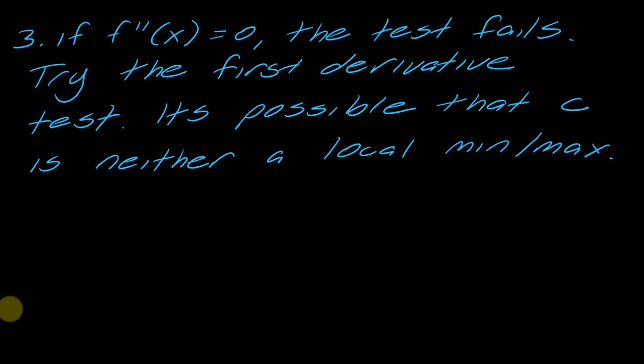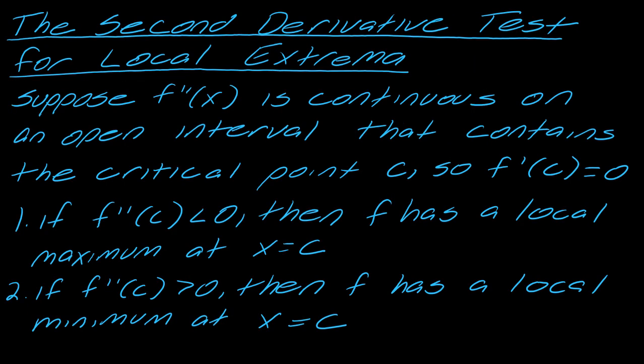There is also a third case: if the second derivative equals zero, the test fails and you'd need to try the first derivative test. It's also possible that c is neither a local min nor a local max.